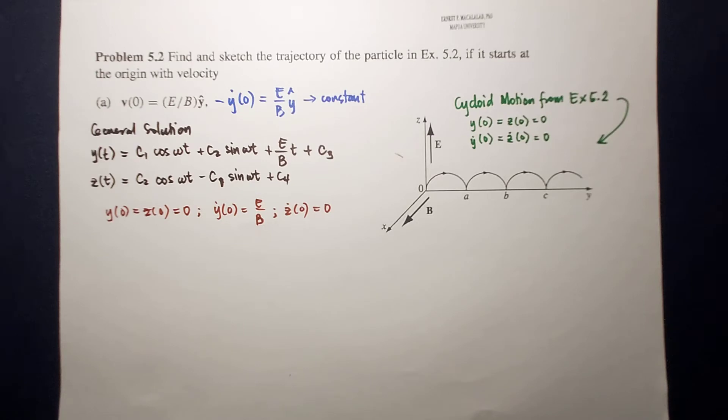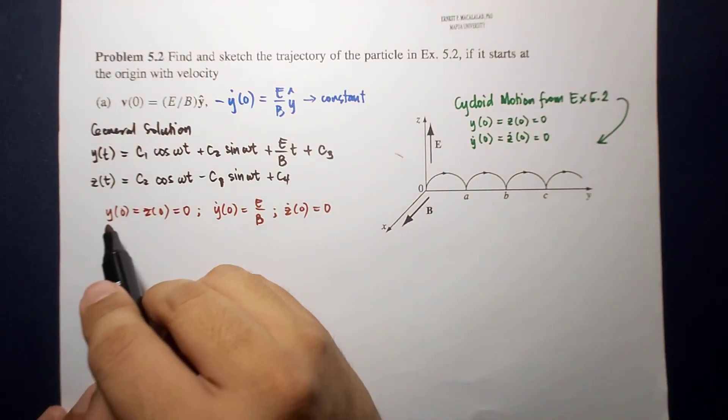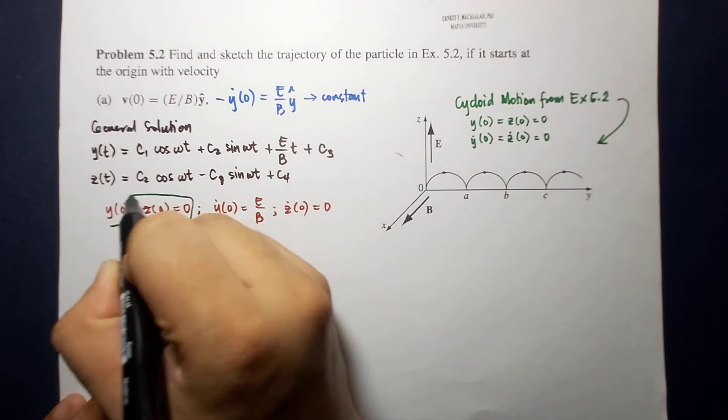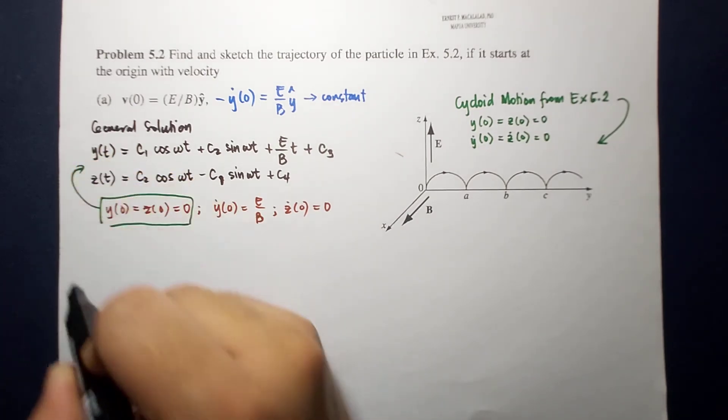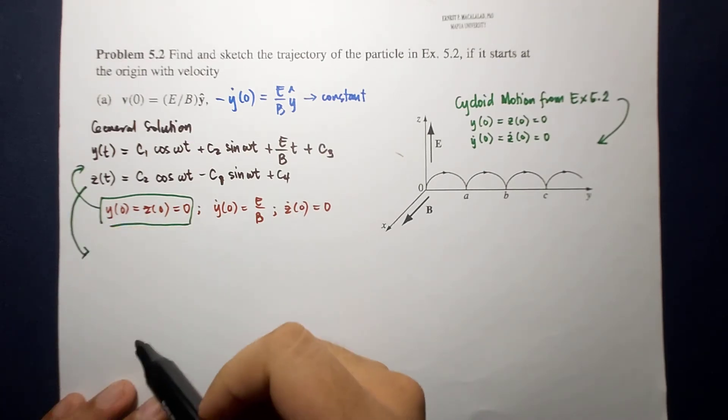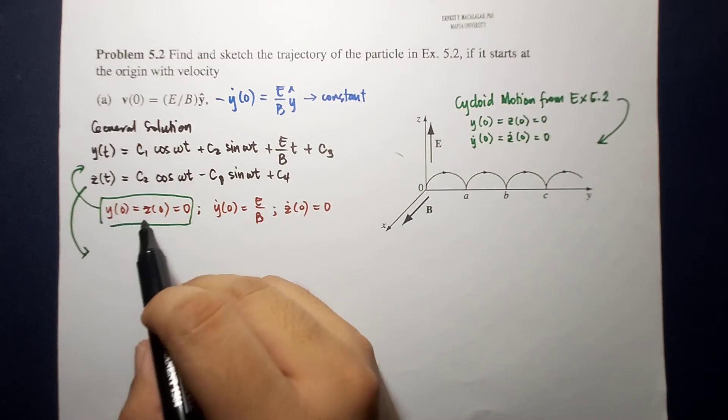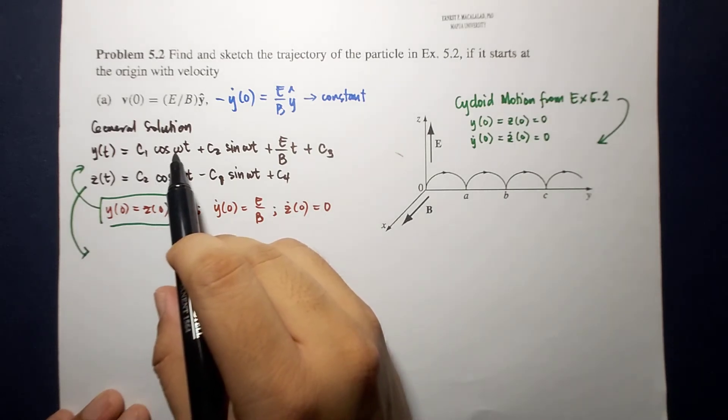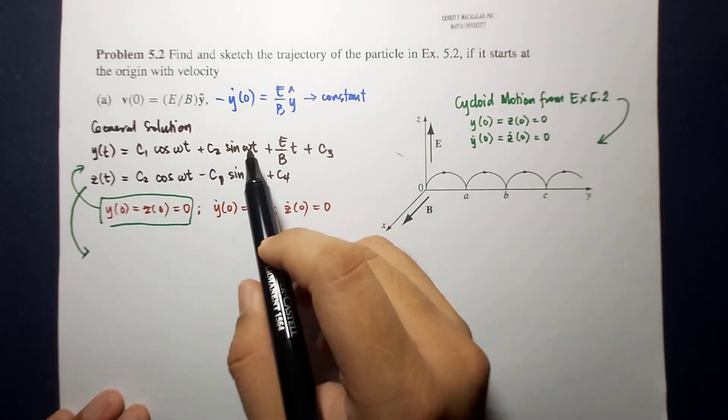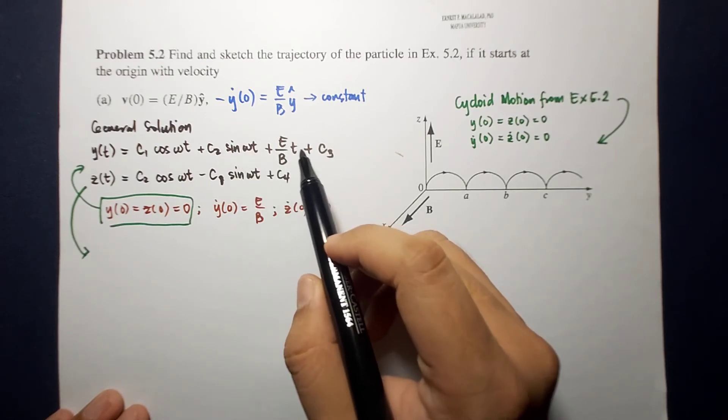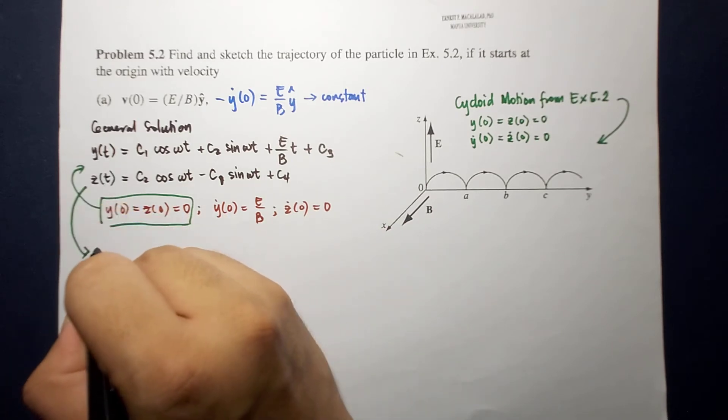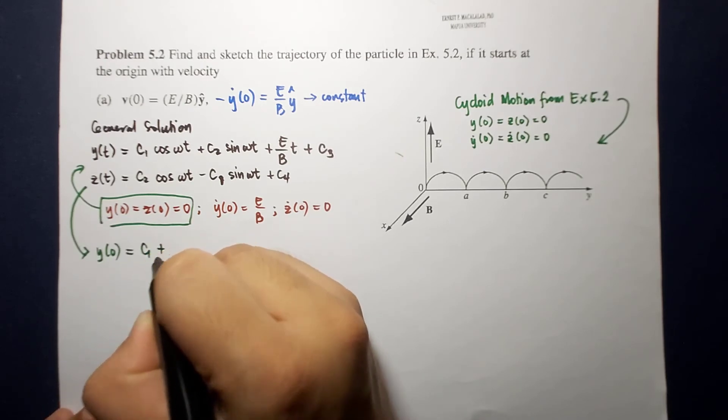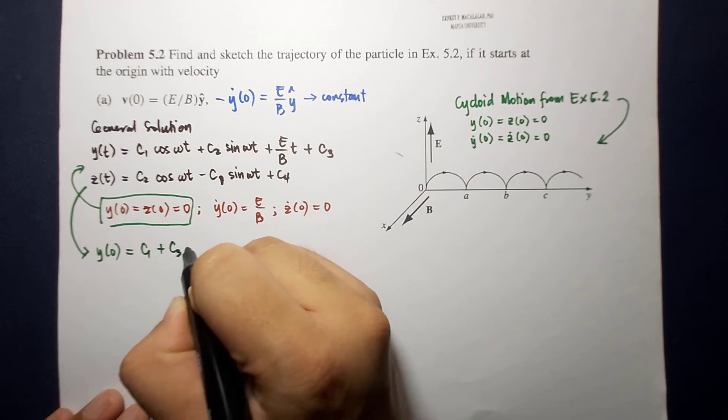So, from here, we can see that when we plug in these values, this will yield the following. When z and y at the origin is where the particle starts at time equal to 0, cosine 0 is 1, sine 0 is 0. So, y at time equal to 0 will become c1 plus c3, and this is equal to 0.